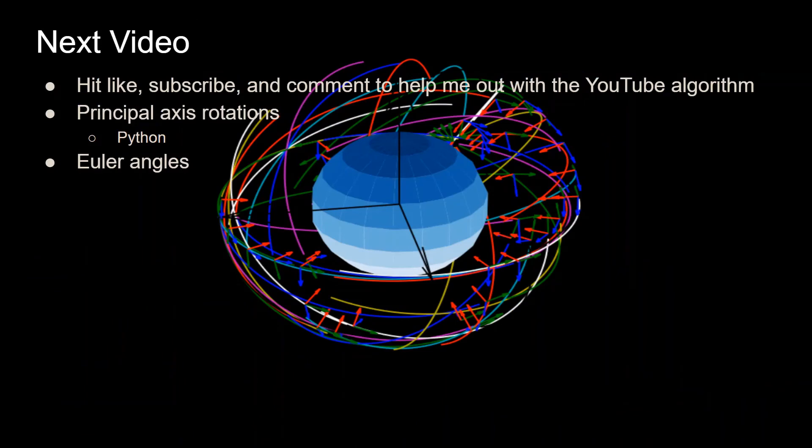So that's pretty much it for this video. Be sure to hit like and subscribe if you like the video, and to comment to help me out with the YouTube algorithm. In the next few videos, I'll be covering the principal axis rotations and how to implement them in Python, which will feed into getting into Euler angles and quaternions. And this is a bit of an intro to the spacecraft attitude control with Python series that I'm going to be working on. Yep, that's it. Leave any questions in the comments, and thank you for watching.